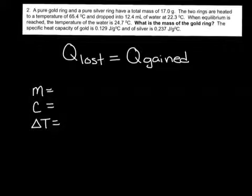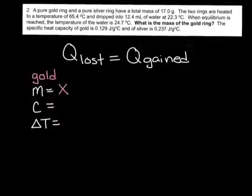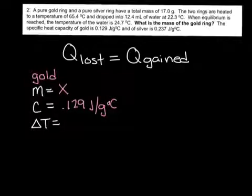So let's take a look at what we know. It says a pure gold ring and a pure silver ring have a total mass of 17 grams, and it's asking me for the mass of the gold ring. I'm going to assign the gold ring a mass of x. The specific heat capacity of gold is 0.129 J/g°C, and the temperature change is 65.4 minus 24.7°C.